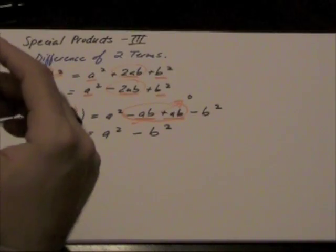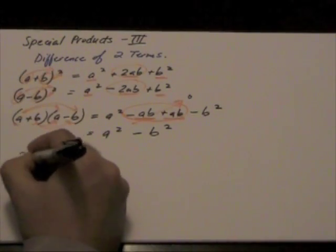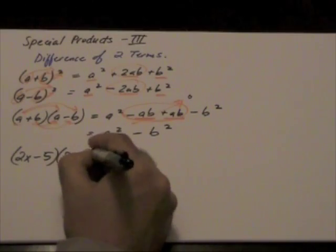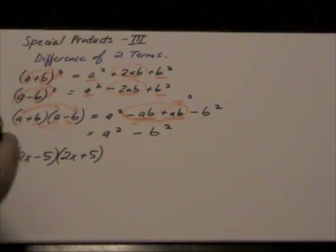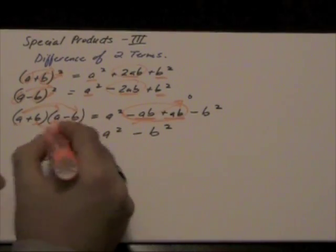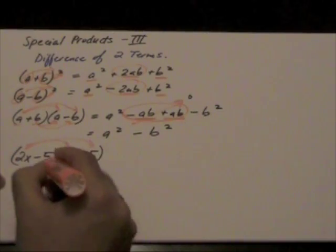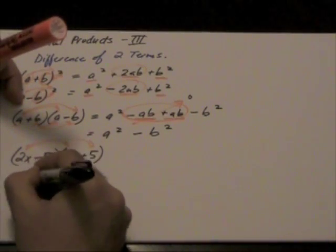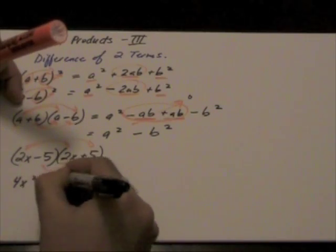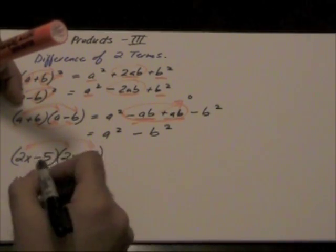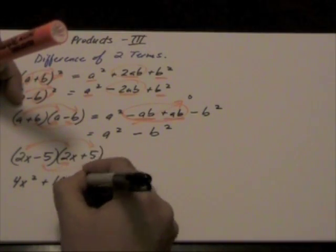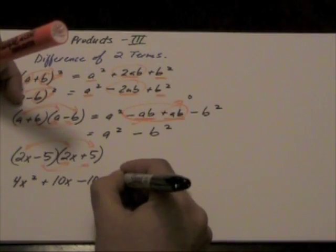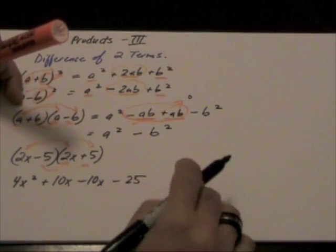So, let's look at an example here. 2x minus 5, 2x plus 5. According to the FOIL rule, this is what we're going to get. 2x times 2x, 4x squared, 2x times 5, plus 10x. Negative 5 times 2x will give me negative 10x. And negative 5 times positive 5 will give me negative 25.